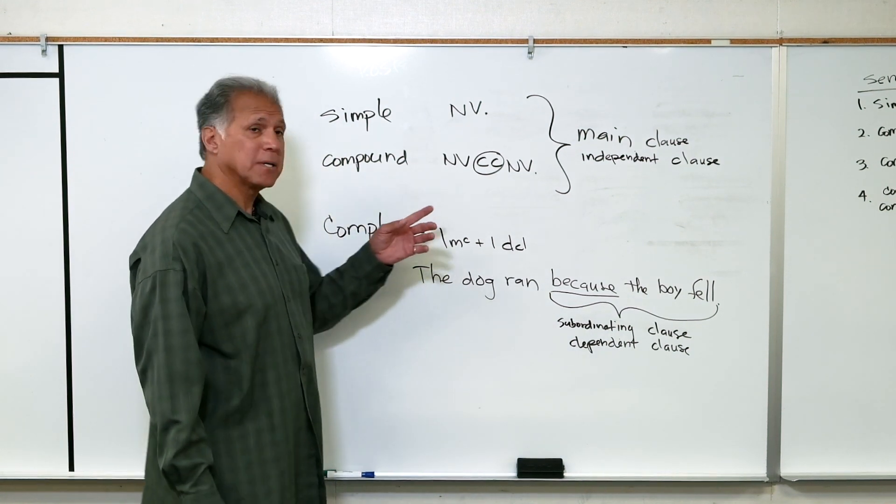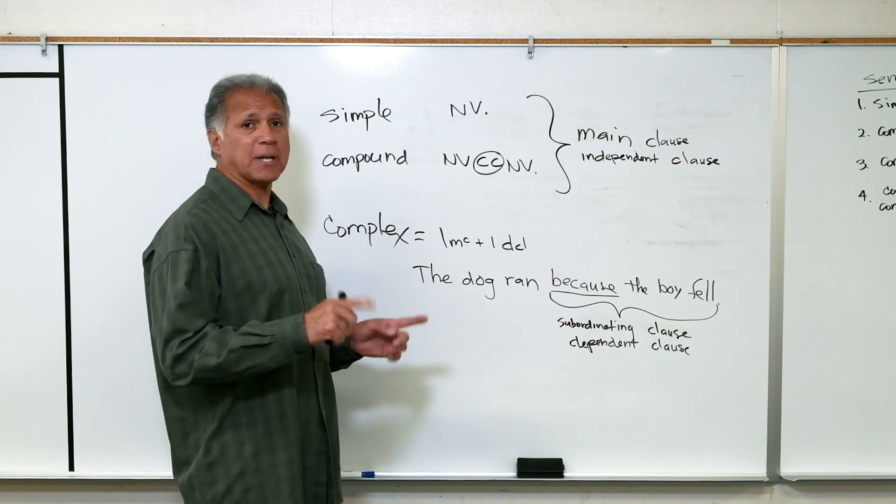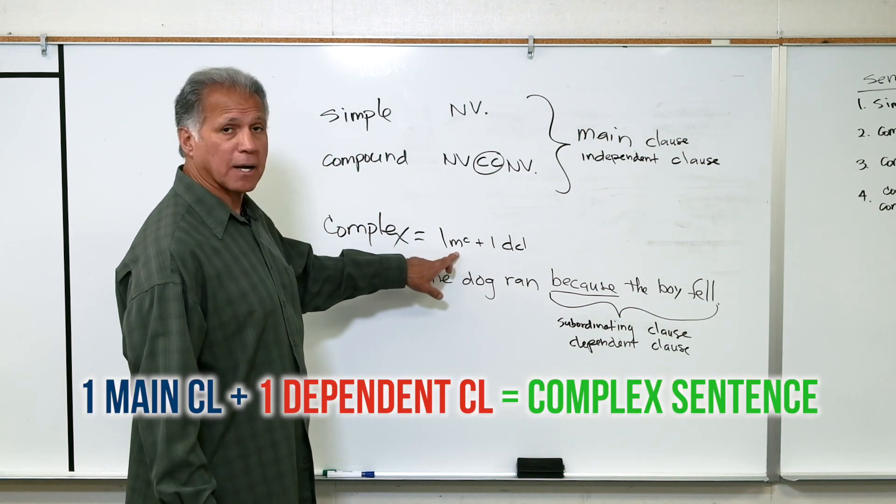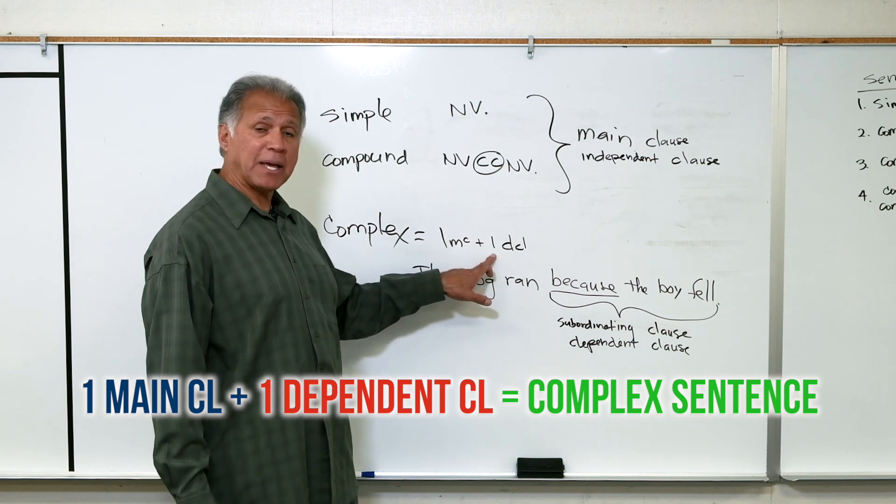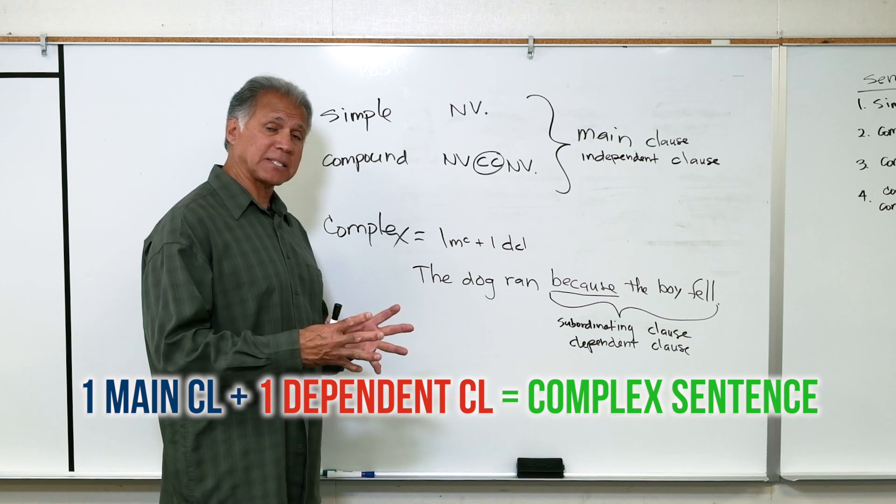Today I want to talk to you about the third sentence structure which is called the complex sentence. The complex sentence is made by adding one main clause and one dependent or subordinating clause that makes a complex sentence.